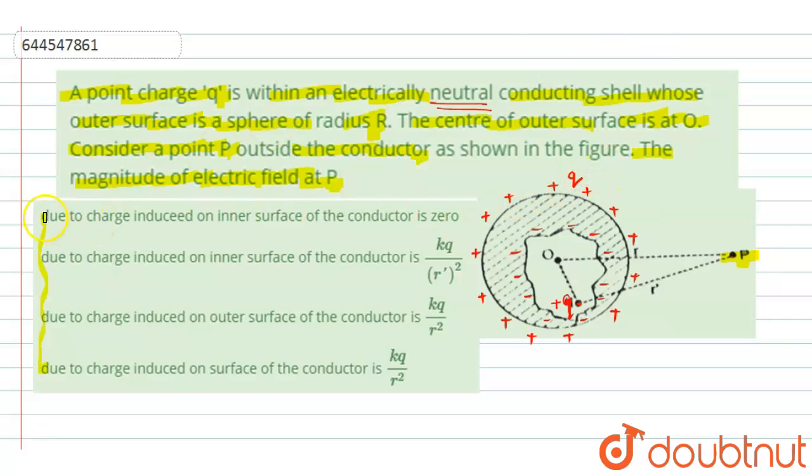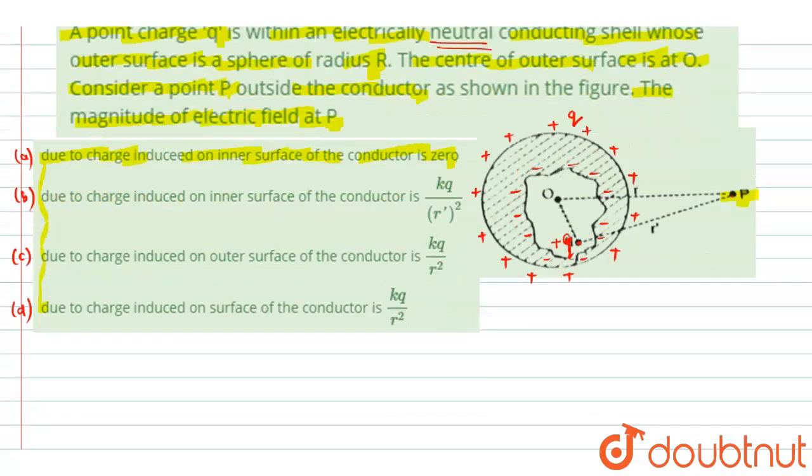Now see, in option A, we are having that due to charge induced on inner surface of the conductor is 0. So let me mark the options first: Option A, B, C and D. Now we know that due to the shielding effect or the principle of electrostatic shielding, the electric field at point P due to this negative charge,